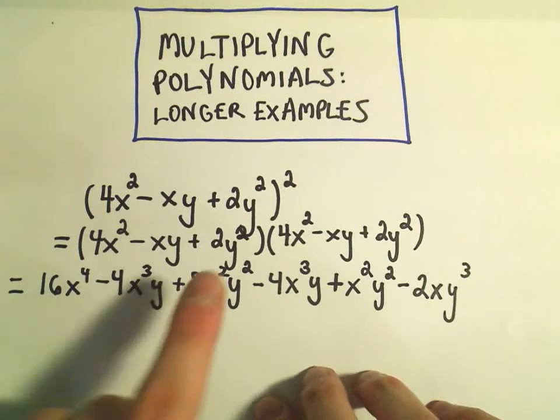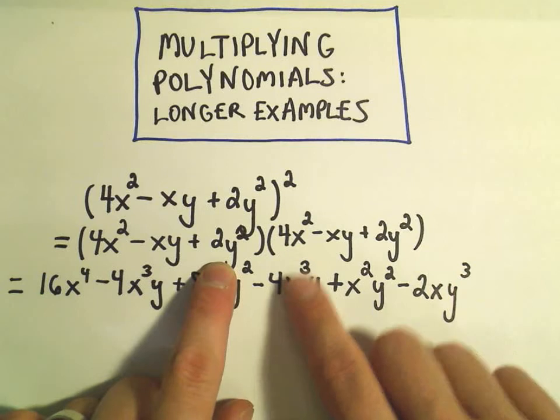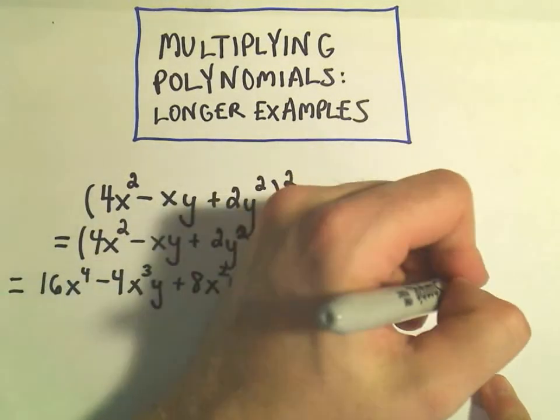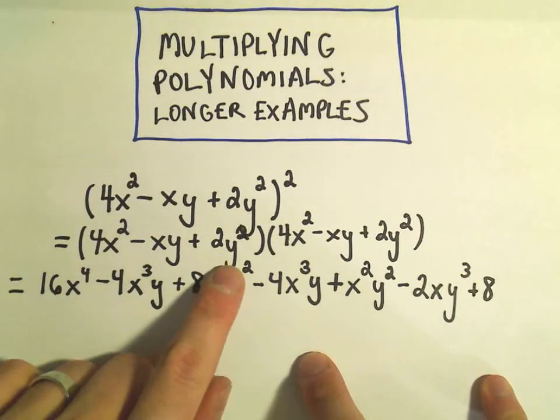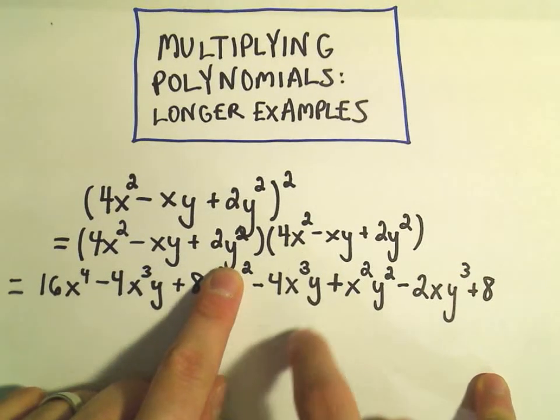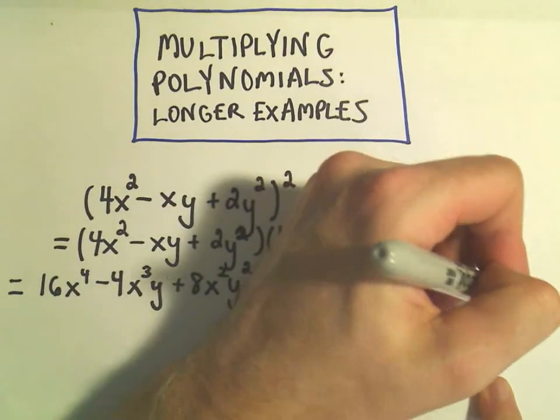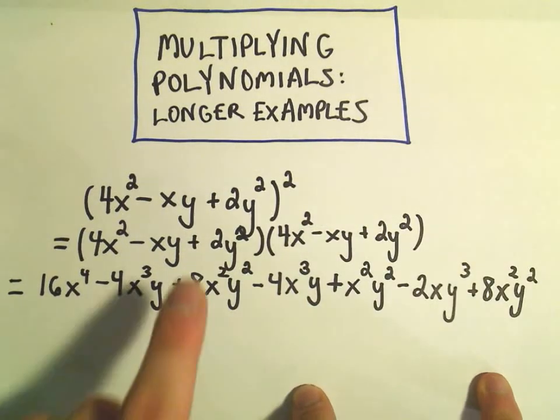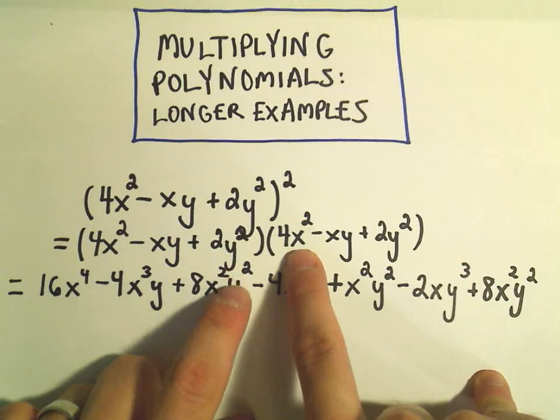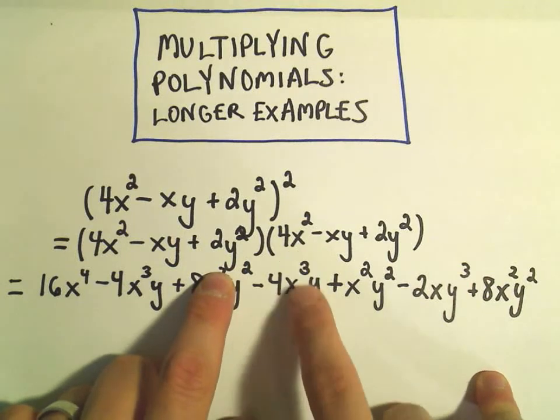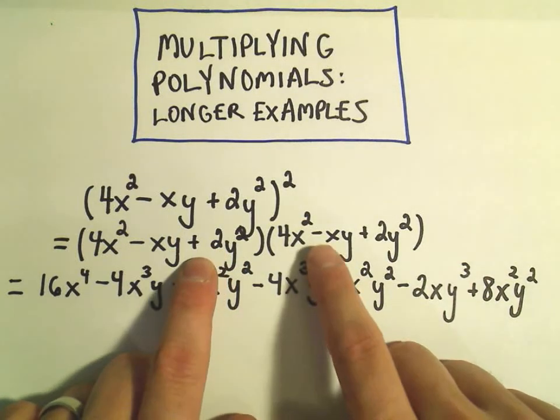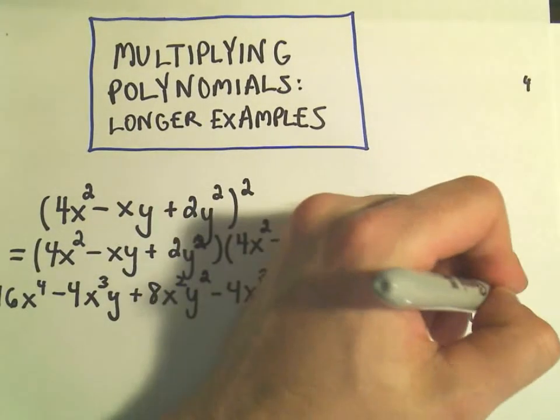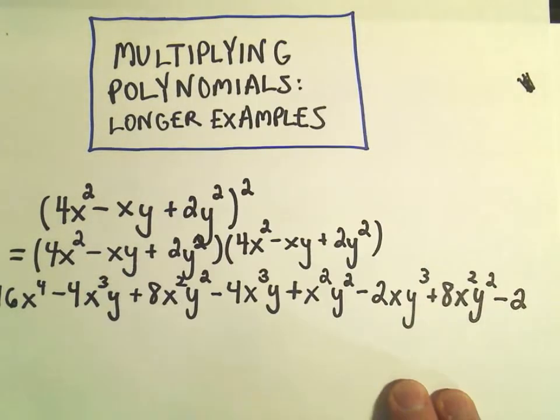Okay, so now we have to multiply the 2y² by everything. So 2 times 4 is going to be positive 8. Then we have y² times x². I always like to write things alphabetically just so I can recognize like terms a little bit easier. So I'm going to write the x² first and then the y². I have positive 2 times negative 1. That's going to give us a negative 2.